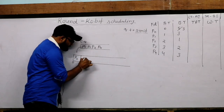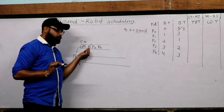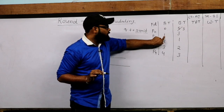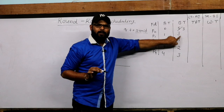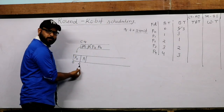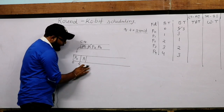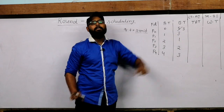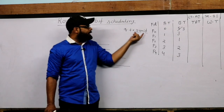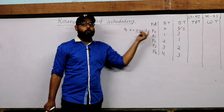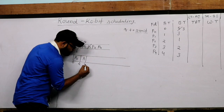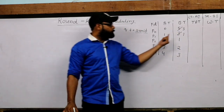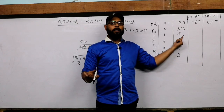I pick P1 from the circular queue and put it in the Gantt chart. P1's arrival time is 1 and burst time is 3. Quantum allows only 2 units, but P1 needs 3 units, so P1 executes 2 out of 3 units — from 2 to 4 in the Gantt chart. After executing 2 units, the remaining burst time for P1 is 1. Always remember the remaining burst time.